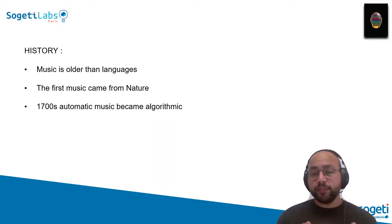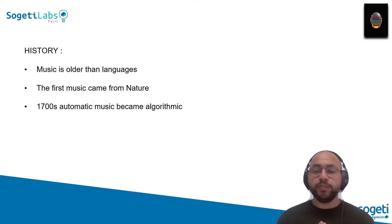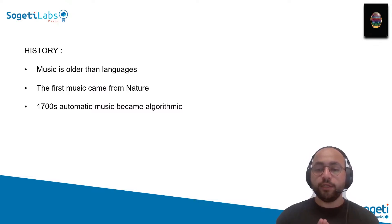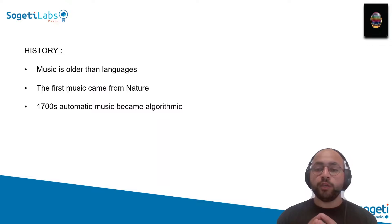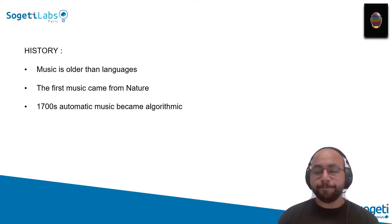Until the 70s, automatic music became algorithmic, which means we asked ourselves: can we represent music using algorithmics? Can we have a mathematical representation of music and use algorithmics to process it?